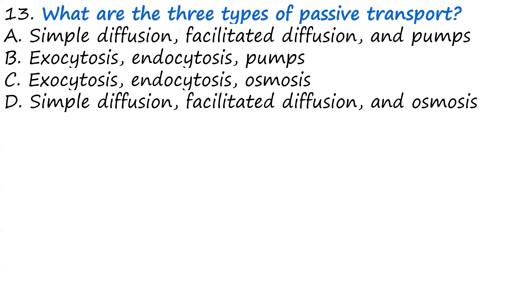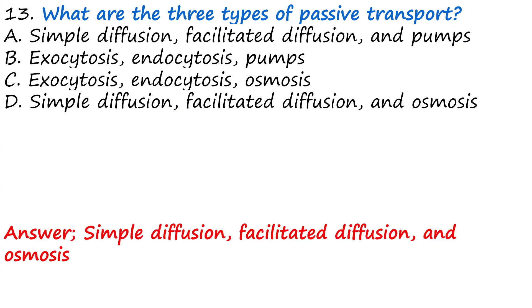Question thirteen: What are the three types of passive transport? A, simple diffusion, facilitated diffusion, and osmosis. B, exocytosis, endocytosis, osmosis. C, exocytosis, endocytosis, forms. D, simple diffusion, facilitated diffusion, and osmosis. The answer is D — simple diffusion, facilitated diffusion, and osmosis.